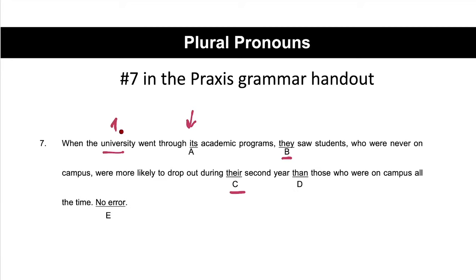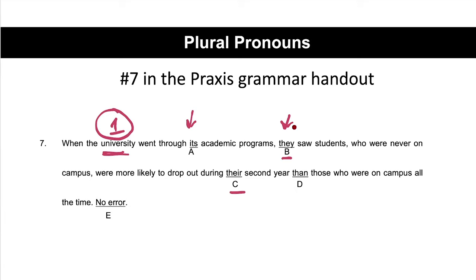The university is one thing. People often say 'their' with university because there are 50,000 people who are part of it, but it doesn't matter. The university is a collective noun and is one thing. So 'its' is the proper pronoun — pronoun-antecedent agreement. Then we have 'they saw students.' Who is 'they' talking about? It's talking about the university. That's pronoun-antecedent disagreement because the university is one thing, and 'they' indicates more than one. So B is the issue.